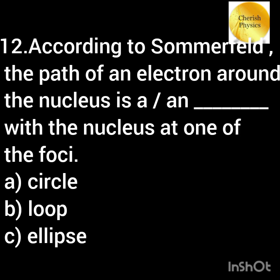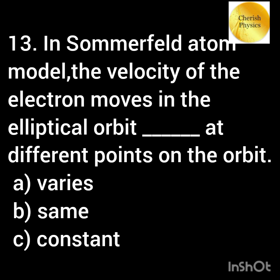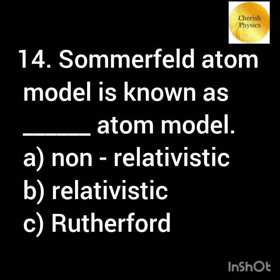According to Sommerfeld, the path of an electron around the nucleus is dash, with the nucleus at one of the foci. In Sommerfeld atom model, the velocity of the electron moving in the elliptical orbit is dash at different points on the orbit. Sommerfeld atom model is also known as what type of atom model?